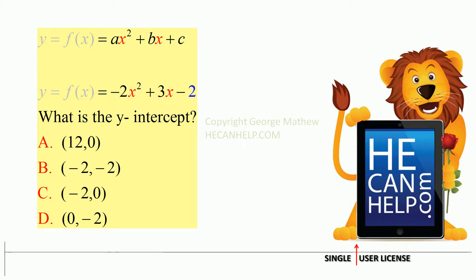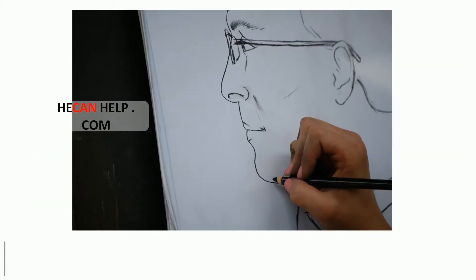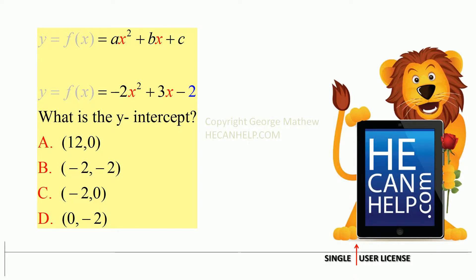y is equal to f of x equals x squared plus bx plus c. Given the function negative 2x squared plus 3x minus 2, what is the y-intercept?